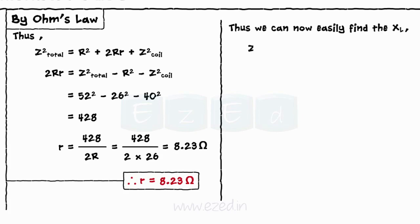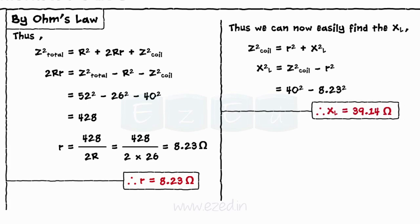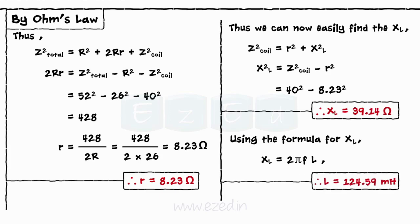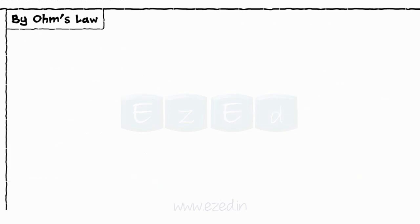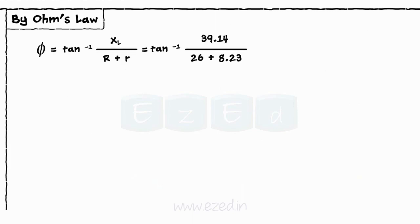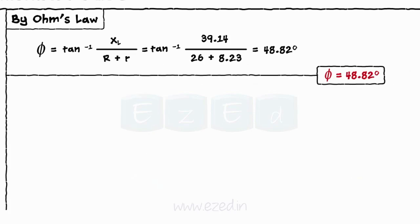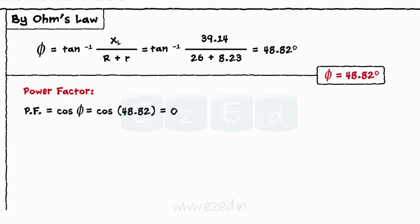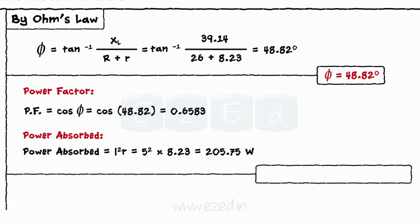Using Z_coil squared equals R_coil squared plus XL squared, the reactance of the inductor comes out to be 39.14 ohms. Using the relation XL equals 2·pi·F·L, the inductance is found to be 124.59 mH. The phase angle phi equals tan inverse of the imaginary part upon real part, giving phi equals 48.82 degrees. Thus the power factor equals cos phi equals 0.6583, and power absorbed equals I squared times R equals 205.75 watts.